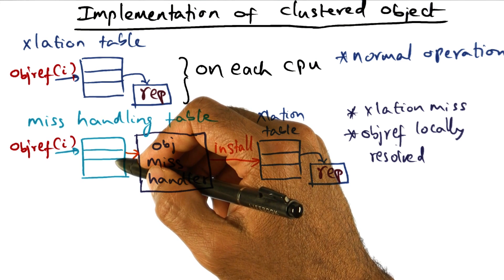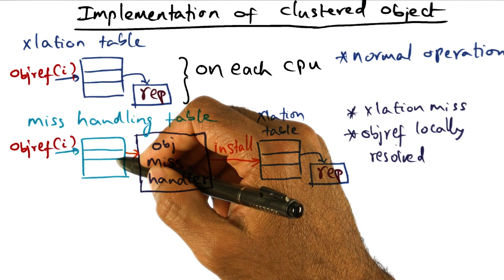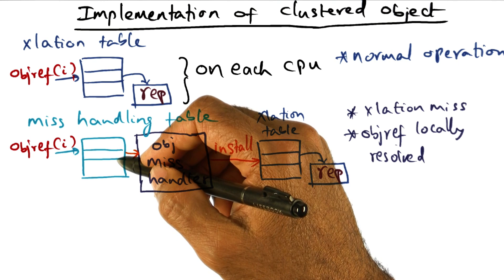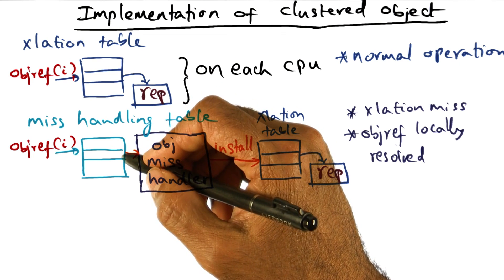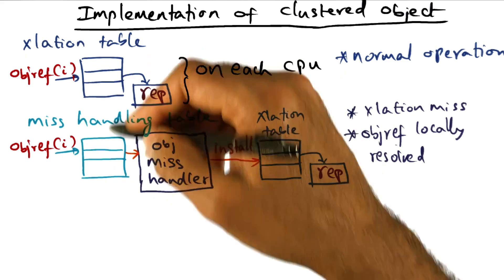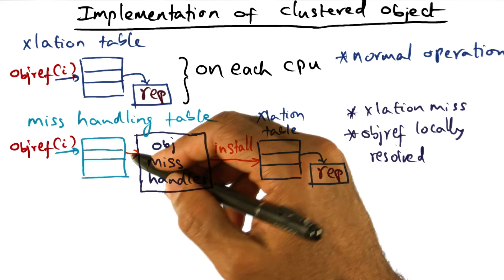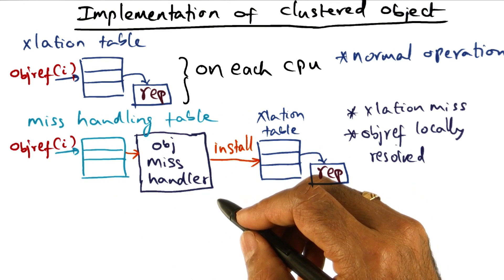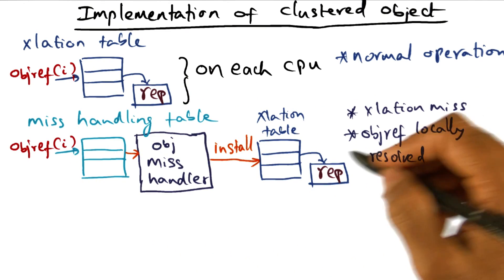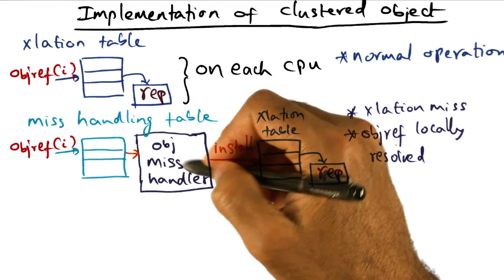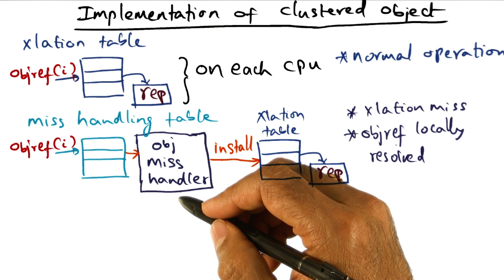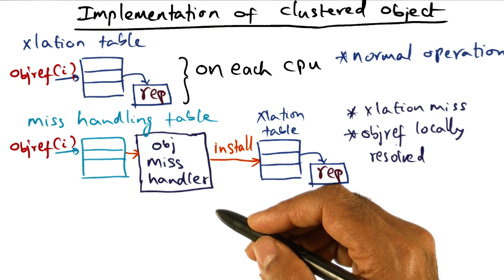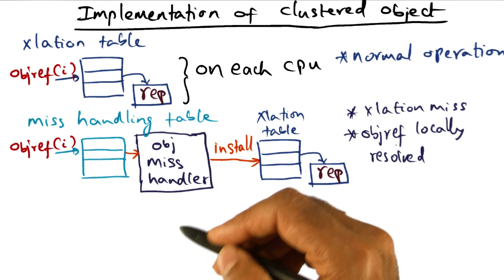If you think about the region object that we talked about, the region object is something that is not going to be accessed on every processor, because depending on the threads that are executing in a particular region, those are the threads that need to access the region object. Therefore, this mishandling table is a partitioned data structure that contains the mapping between object references and the mishandlers that correspond to those object references. So in this particular example, the mishandling table happens to contain the mishandler for this particular object reference. It is possible that when an object reference is presented on a particular processor, the object mishandler is not local because the mishandling table is a partitioned data structure.